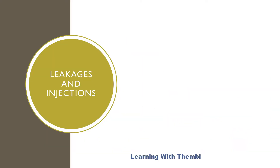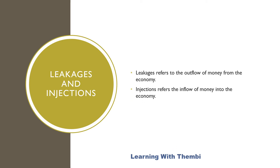Not only did we mention real flows and money flows in the economy, but we also spoke of monetary inflow and monetary outflow in the economy. A good example of this was exports and imports. We said imports are considered to be an outflow, whereas exports are considered to be a monetary inflow. We are now going to refer to all outflows as leakages in the economy, and all inflows as injections in the economy.